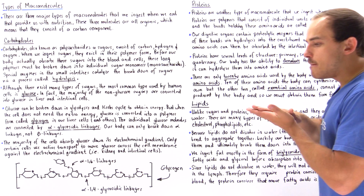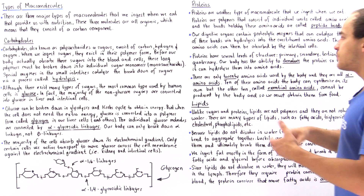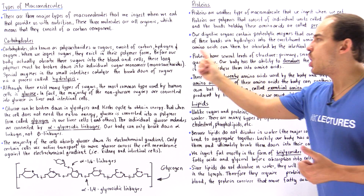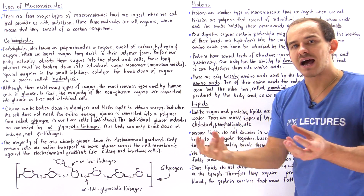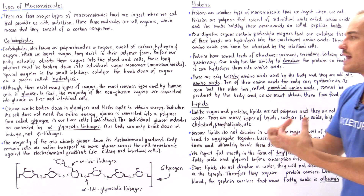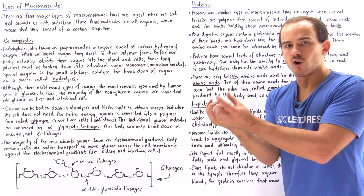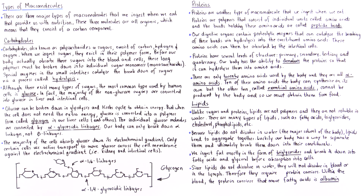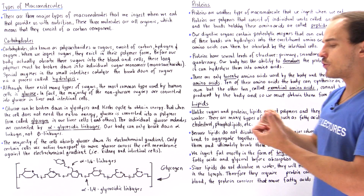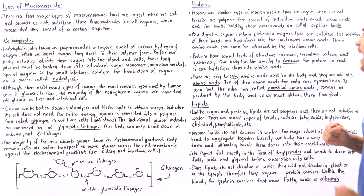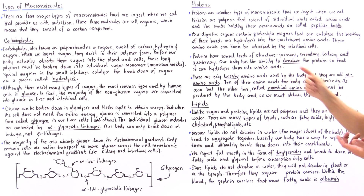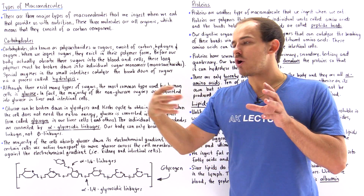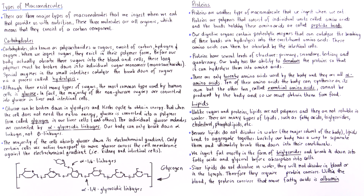Proteins have many levels of structure. The largest level is quaternary, where several polypeptides bond together via covalent bonds — our disulfide bridges — to form a single protein structure. We also have tertiary, which refers to the three-dimensional structure of the protein; secondary, which refers to either beta-pleated sheets or alpha-helixes; and primary, which is basically the long sequence of amino acids inside the protein.